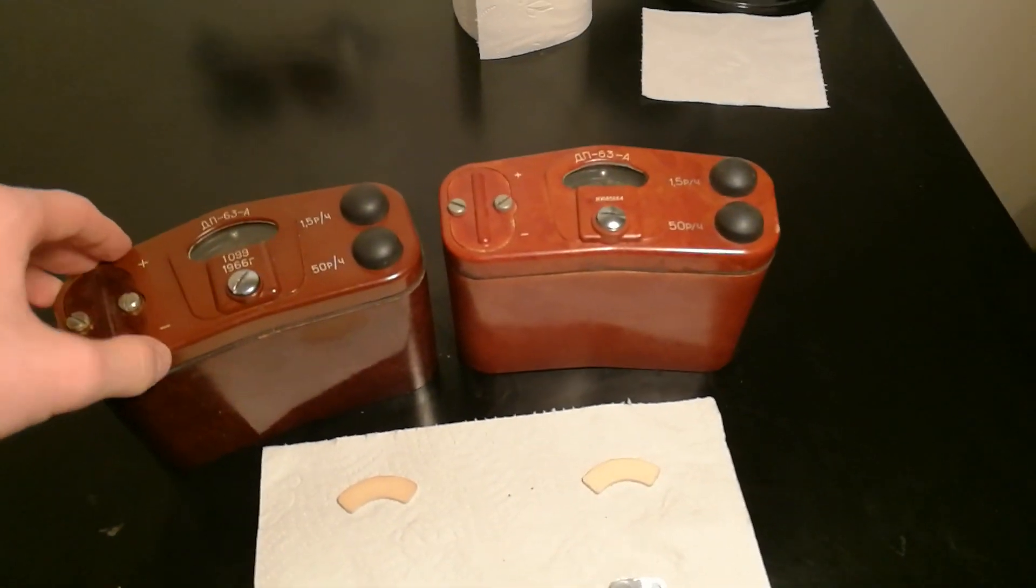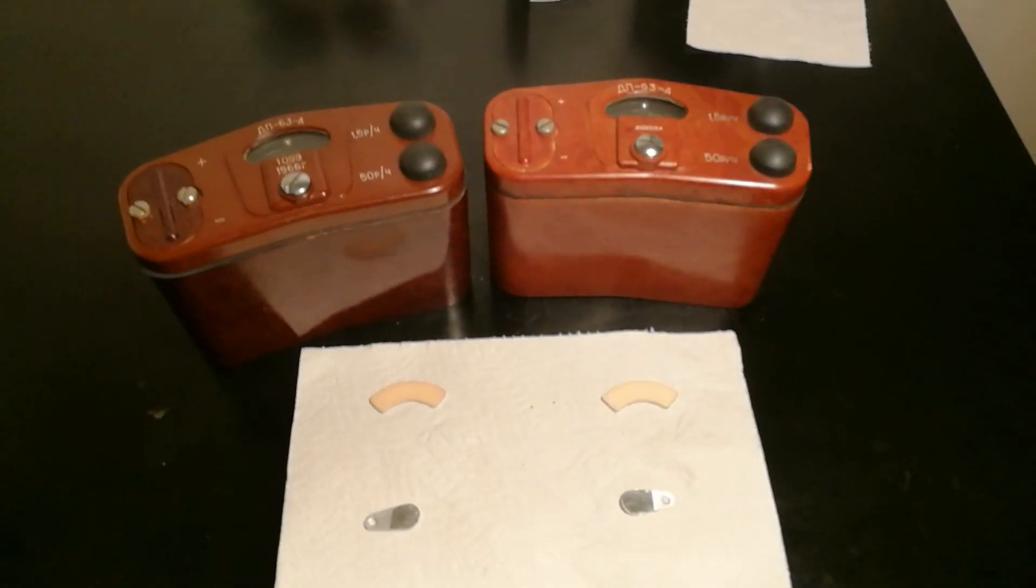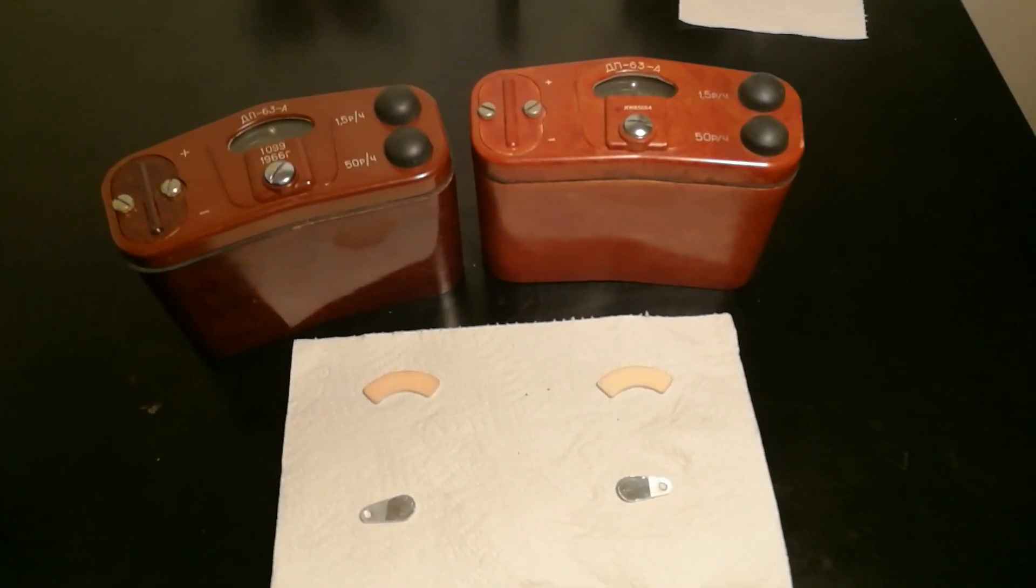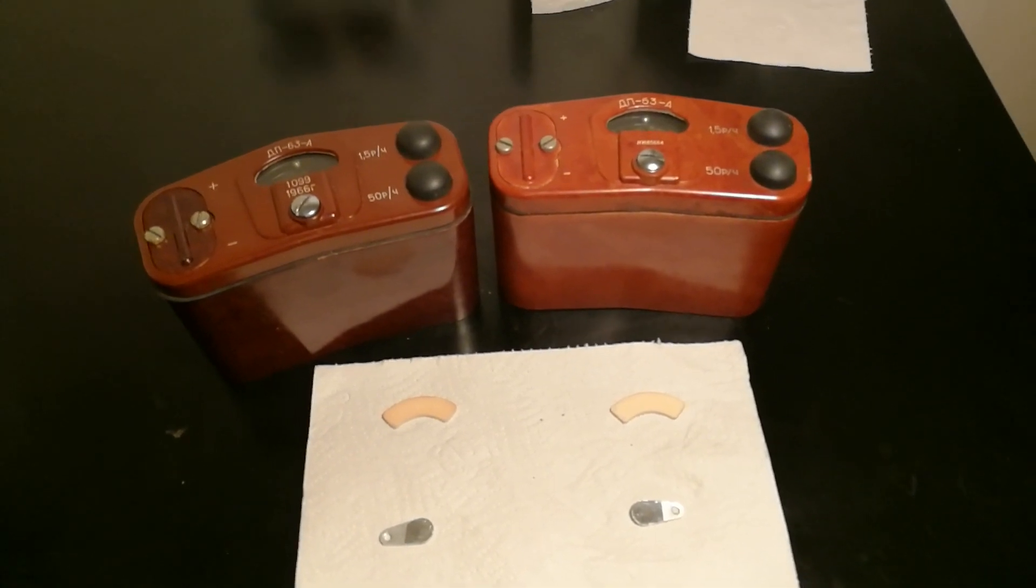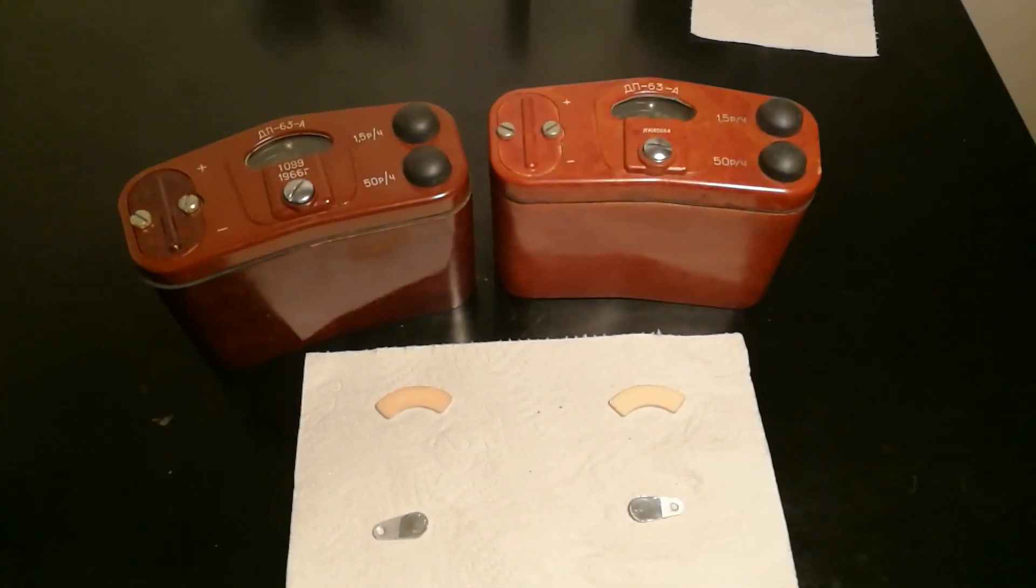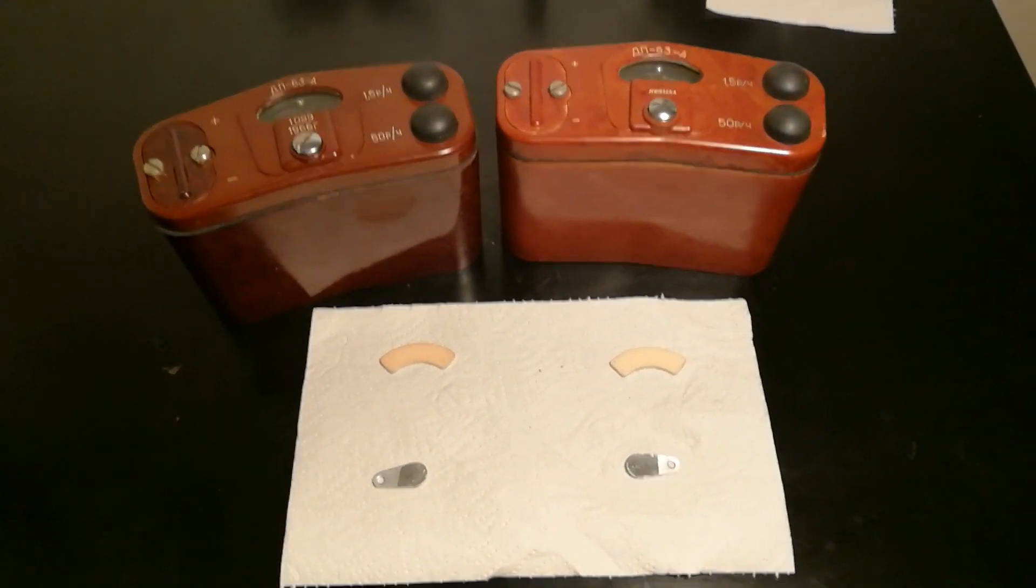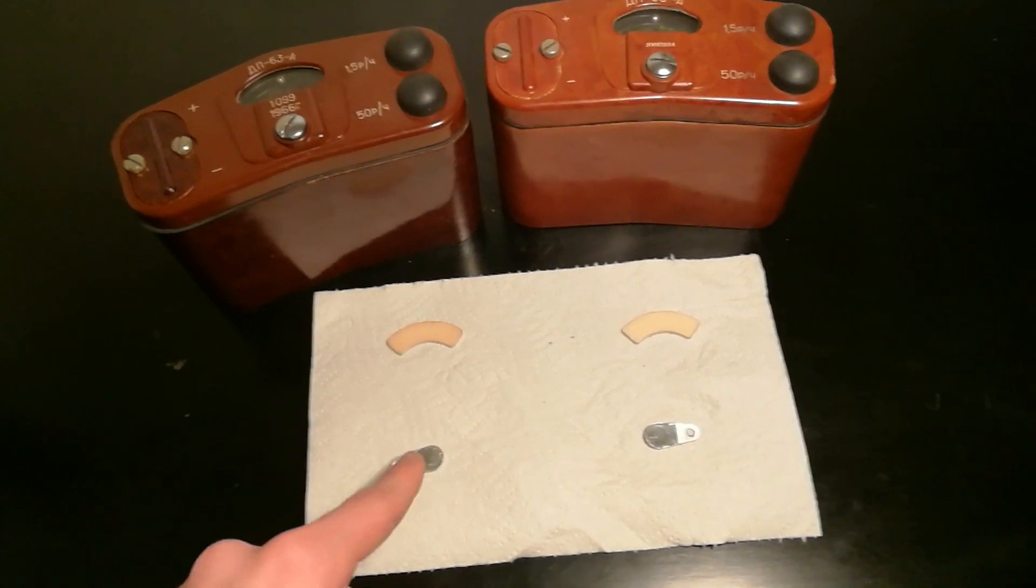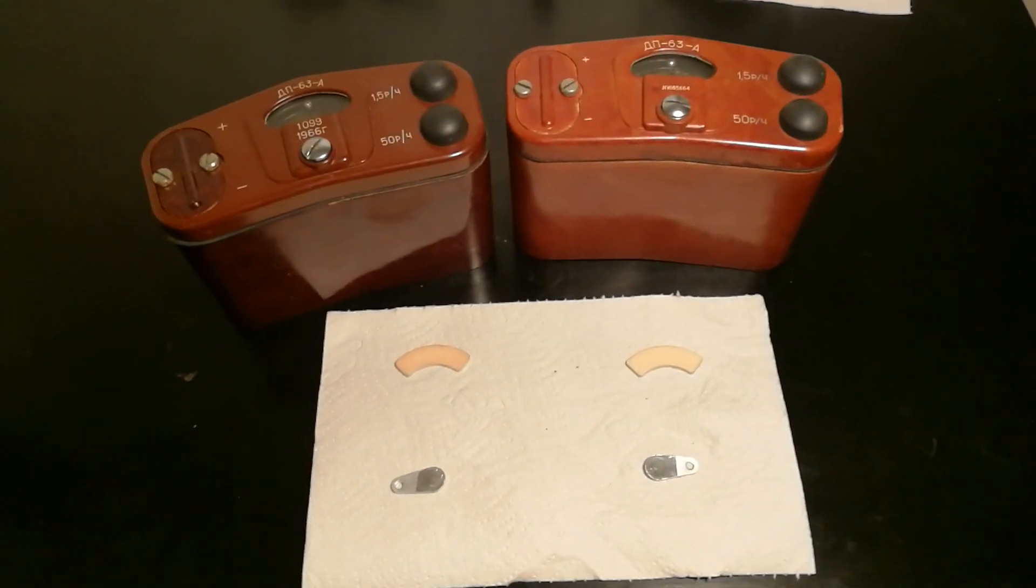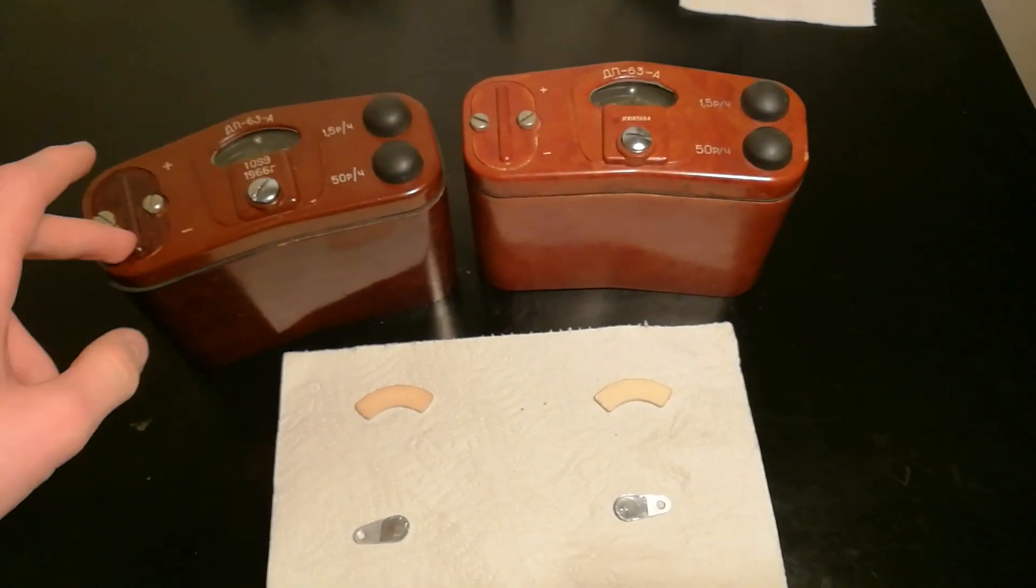DP-63 series are a type of survey meter made by the Soviet Union during the Cold War. They come in five different models. The first one is a DP-63 without the A. It was made in the late 50s to the early 60s, and it did contain a radium scale, a Strontium-90 source. It's a B-8 source. I do not have an example of this because I haven't found one on the market, but I have these two models.